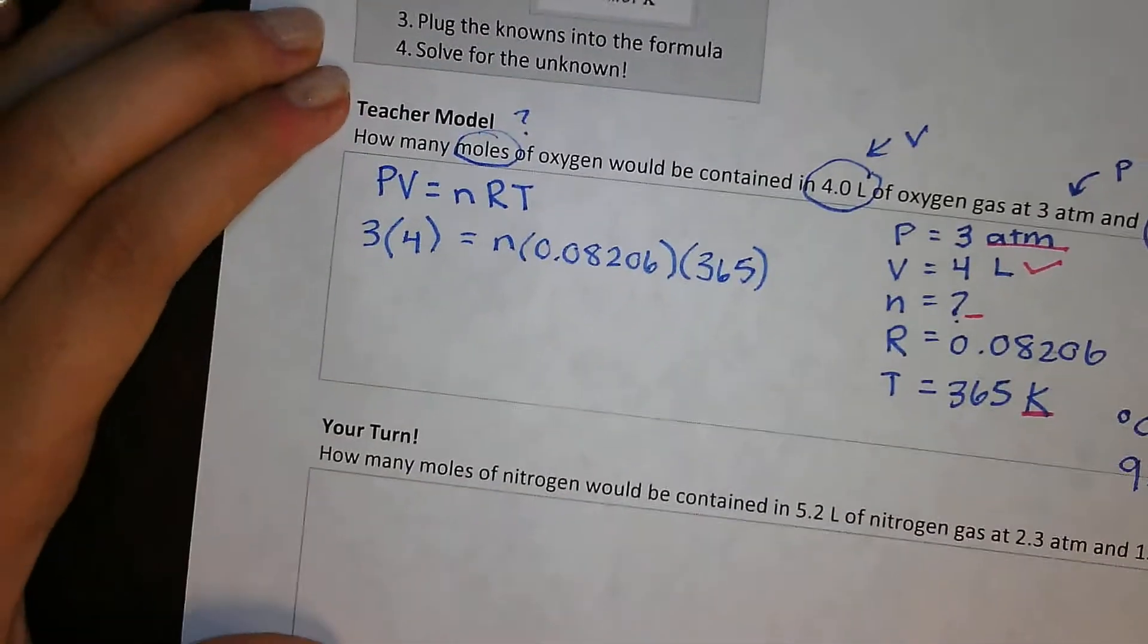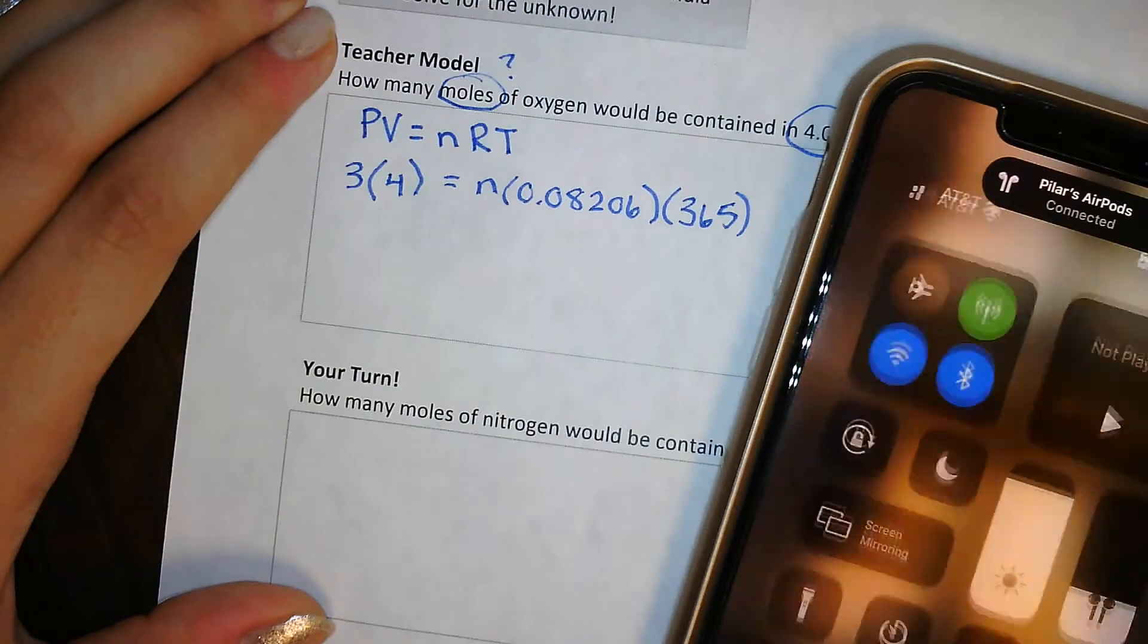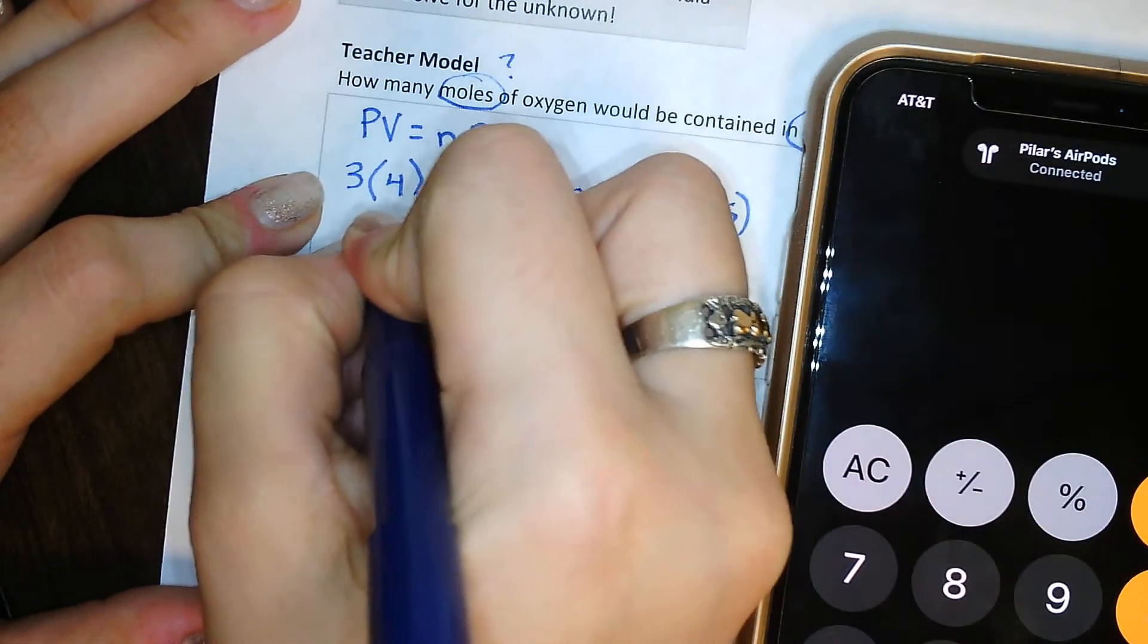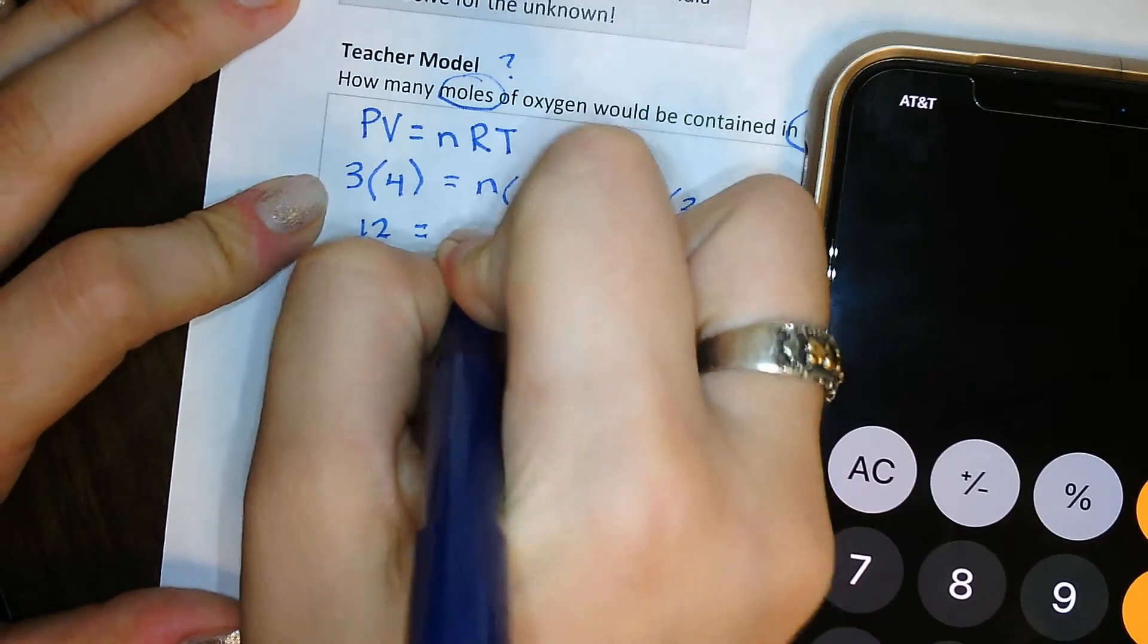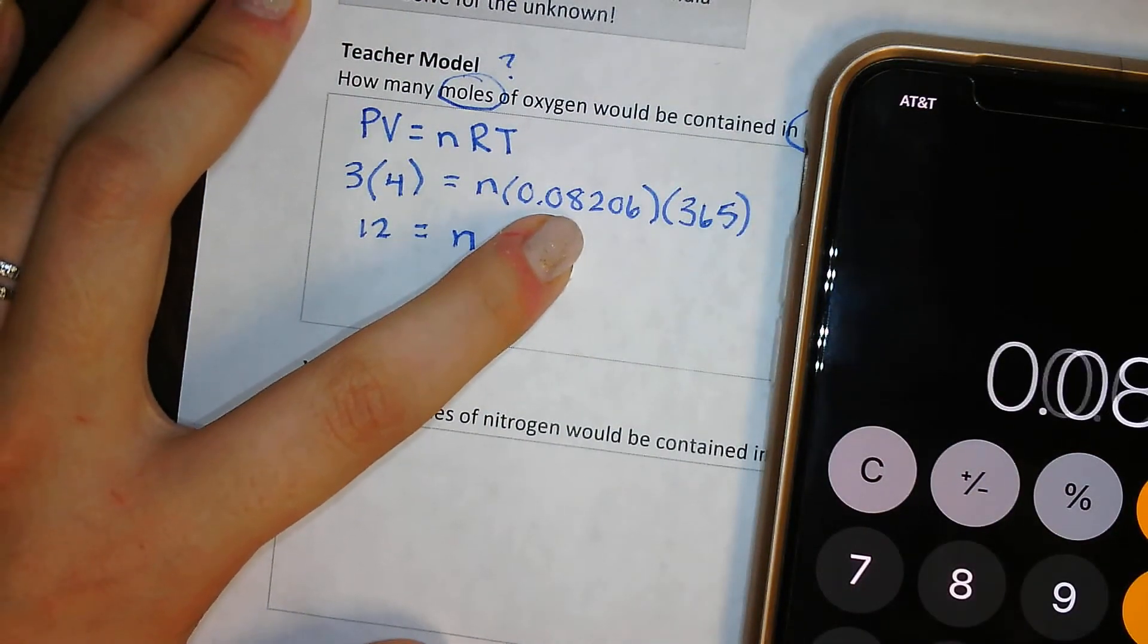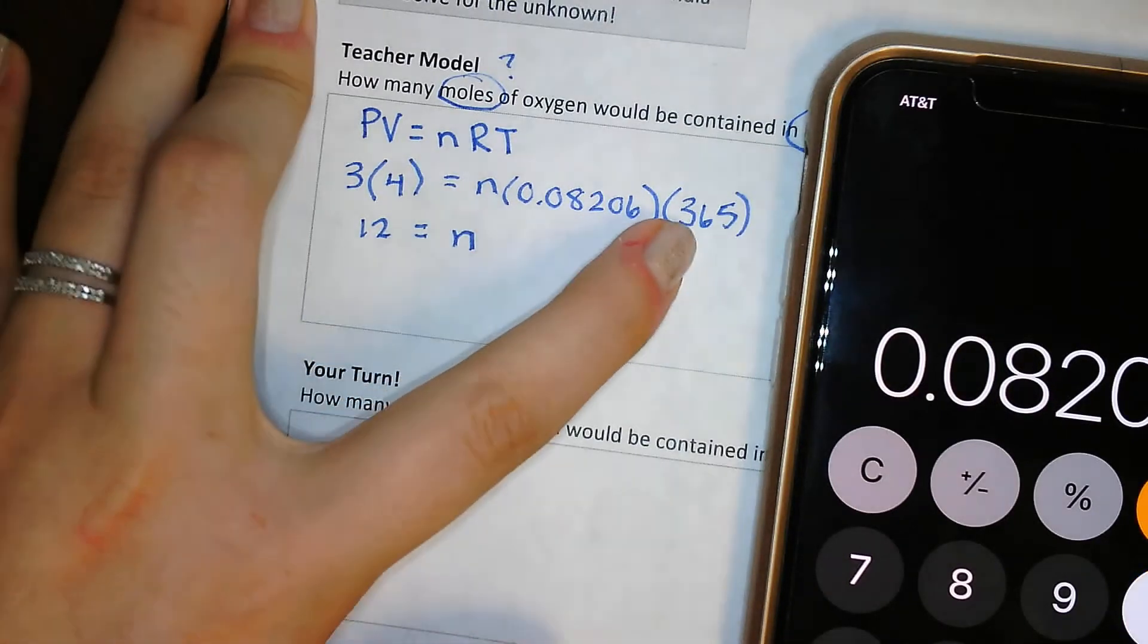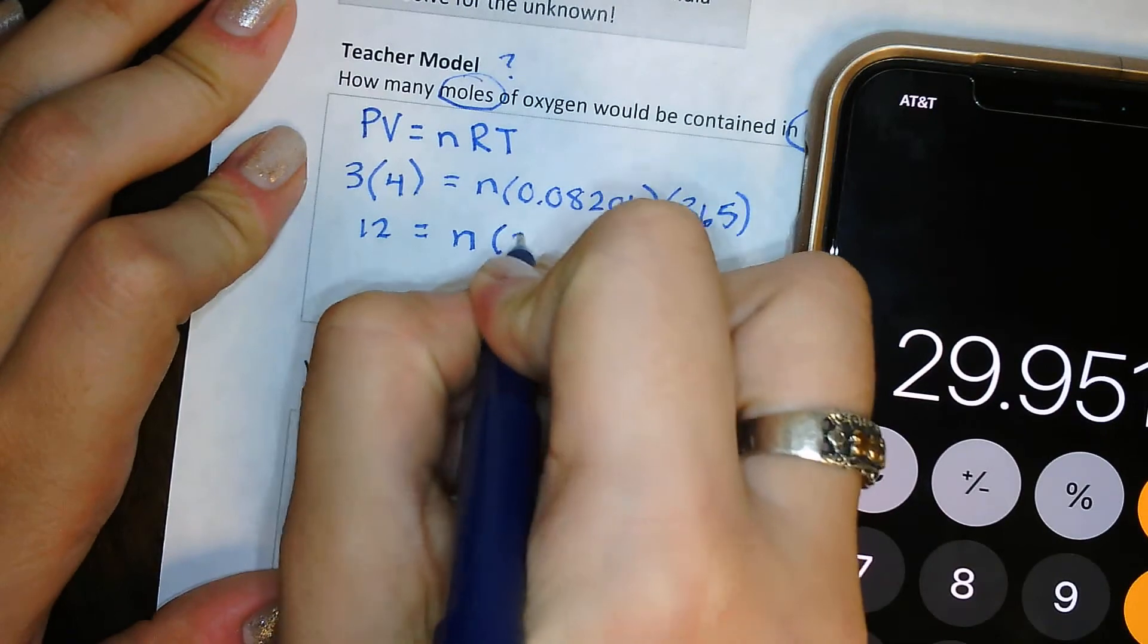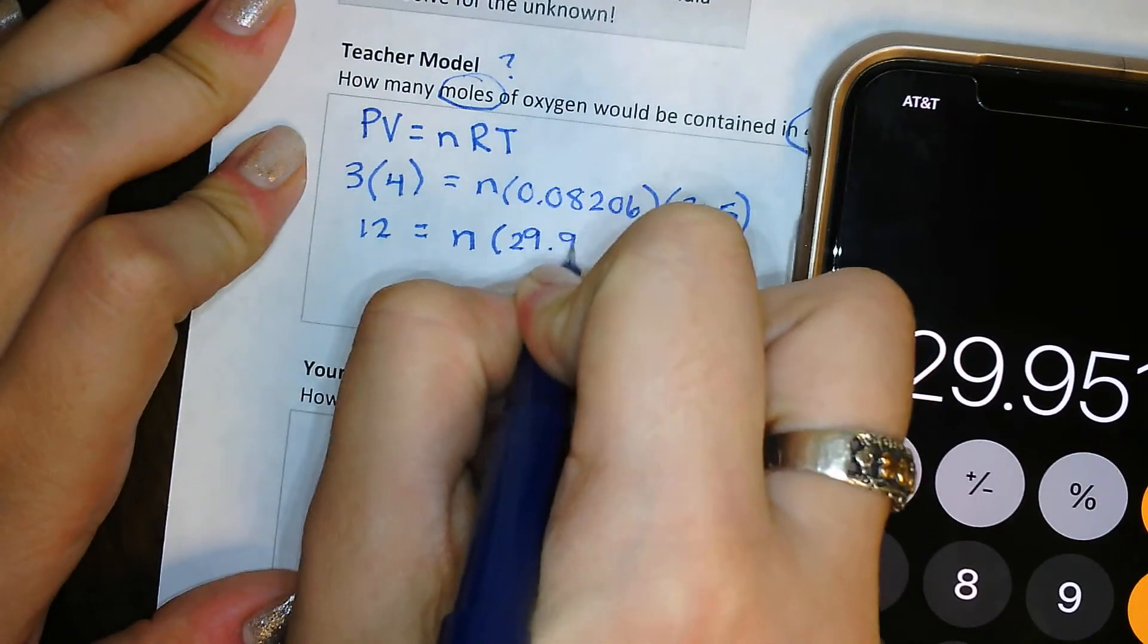So now we can multiply these numbers out and then solve for N. So 3 times 4 is 12. 12 is equal to N times 0.08206 times 365 is equal to about 29.95.